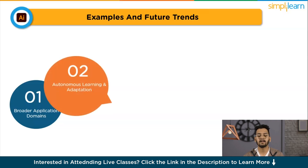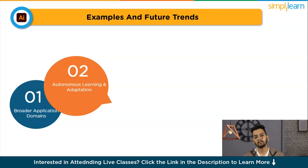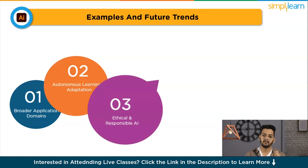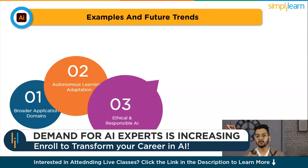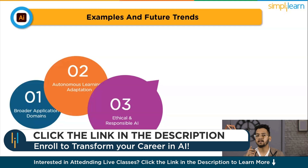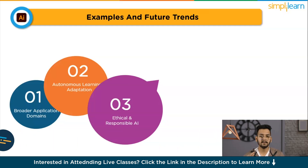The second trend is autonomous learning and adaptation. AGI systems will likely become more autonomous, continuously learning and adapting to new information without explicit programming. For example, an AGI-based virtual assistant might learn to understand and respond to user preferences and tasks over time, improving its performance without manual intervention. The third trend is ethical and responsible AI. As AGI evolves, addressing ethical concerns and ensuring responsible AI becomes crucial. Future trends may include the development of frameworks and regulations to guide the ethical use of AGI, preventing biases and ensuring fairness in decision-making processes.